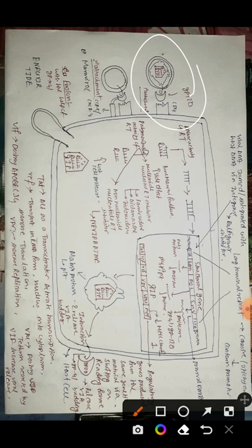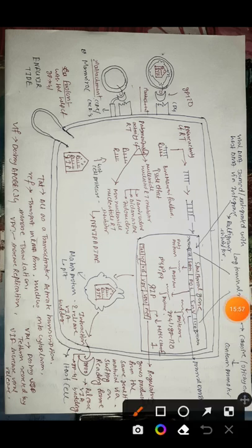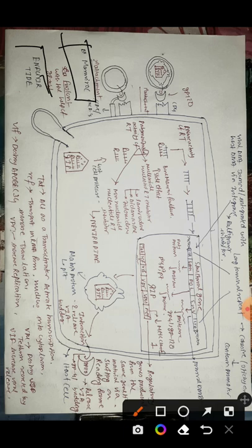A quick revision of the replication cycle: primary attachment is between GP120 and CD4; secondary attachment involves the active site exposed by GP120 interacting with CCR5 and CXCR4 chemokine receptors, with CCR5 being the primary choice during initial infection. CCR5 can be blocked by maraviroc. Then fusion occurs via GP41, which can be blocked by enfuvirtide.